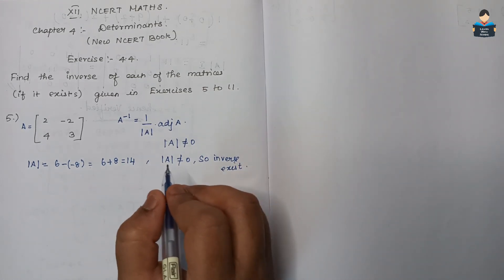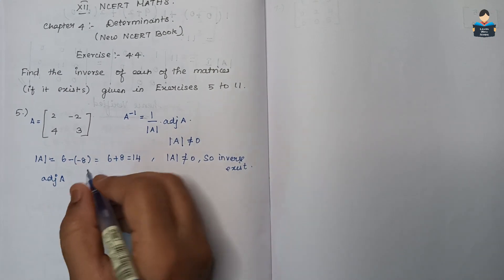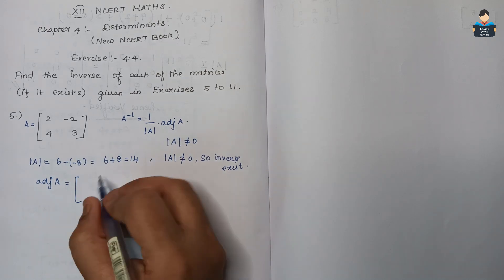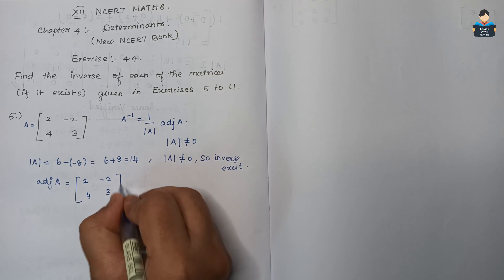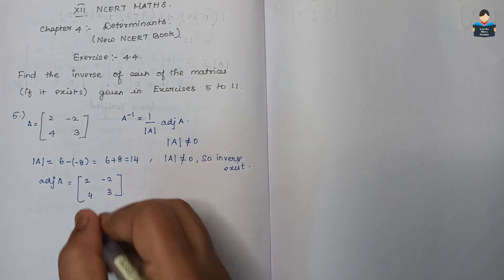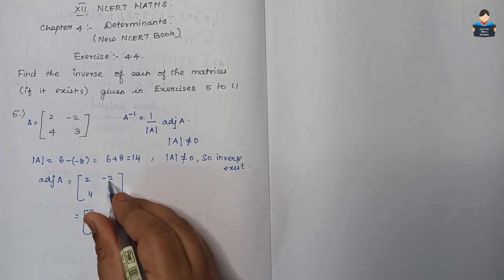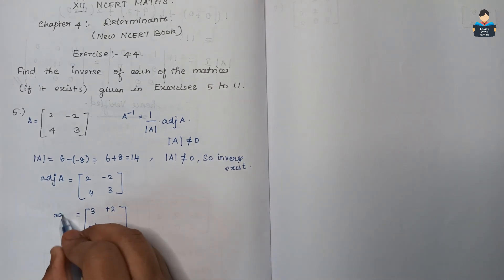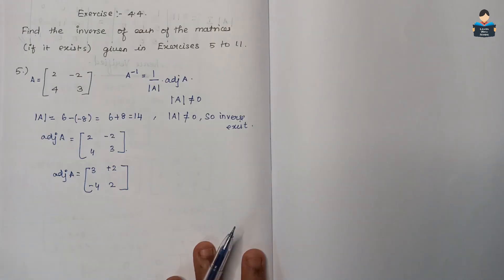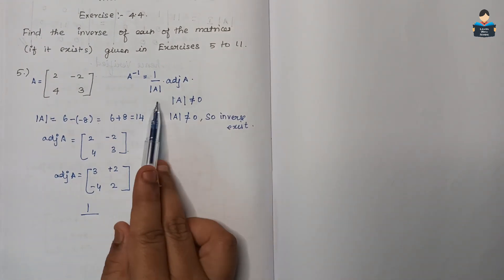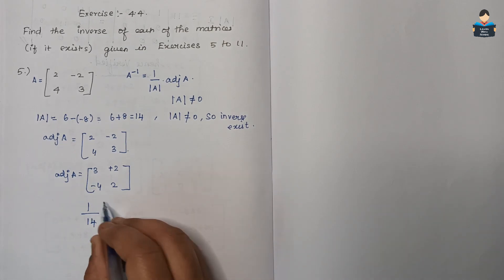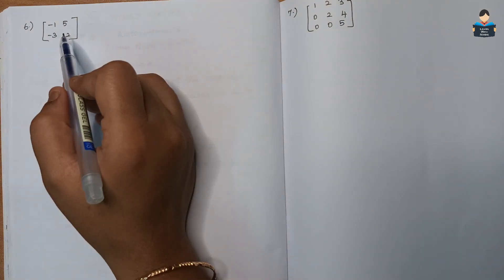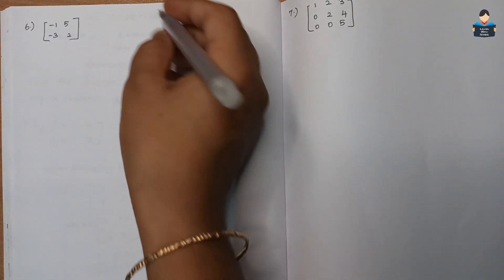Next, find the adjoint of A. After finding the adjoint, substitute into the formula: inverse of A equals 1 by determinant of A, which is 14, into adjoint of A. The matrix gives us elements 3, minus 4, 2, 2. This is the answer for question 5. Next is question 6, a 2 by 2 matrix where we check if the inverse exists.